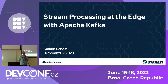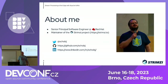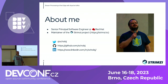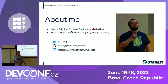Hello and welcome to my talk about stream processing at the edge with Apache Kafka. My name is Jakub Scholz and I work at Red Hat as an engineer. I'm also a maintainer of the project called Strimzi, which is a Cloud Native Computing Foundation project about running Apache Kafka on Kubernetes — and that will be one of the things I'll use later in the demo.